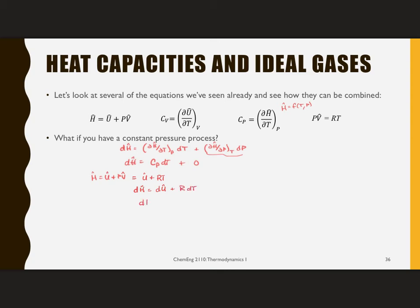So DH is C sub V DT plus R DT. But we just said that C sub P DT is also equal to DH. If I combine these, then what I find is that C sub P is equal to C sub V plus R.